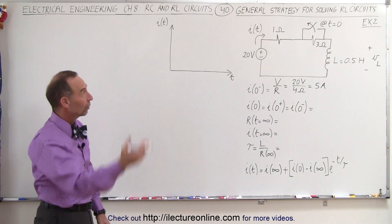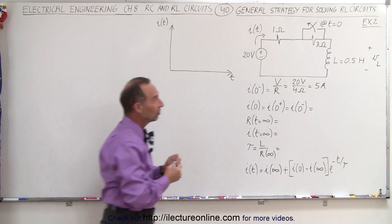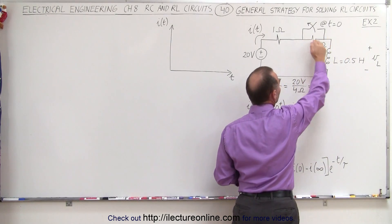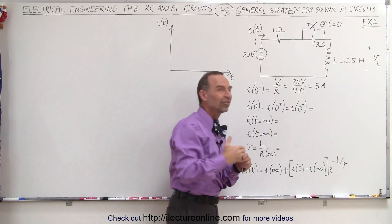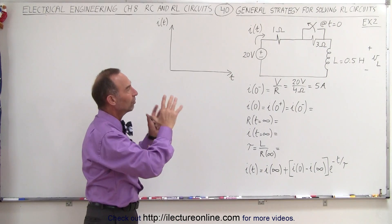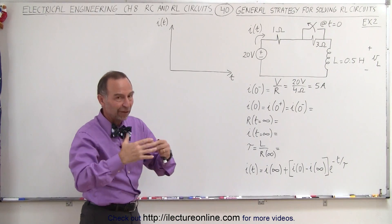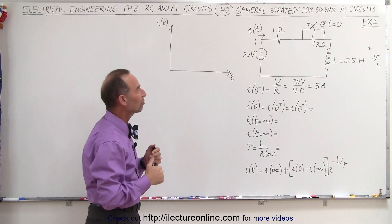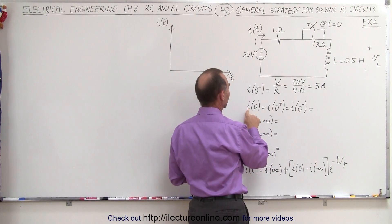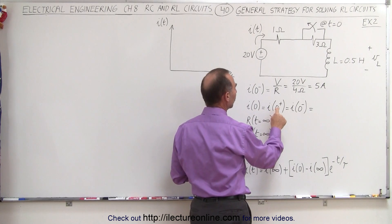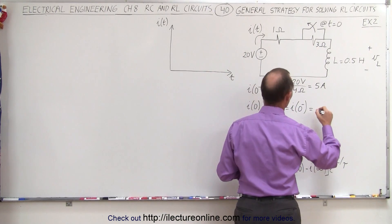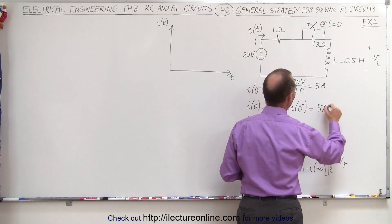Now the switch opens up, and because there's an inductor in the circuit which opposes the change in the current, the current through the circuit right after the switch opens is exactly the same as the current before the switch opens. The inductor will prevent a step change of the current, so therefore the current at time equals zero is 5 amps.